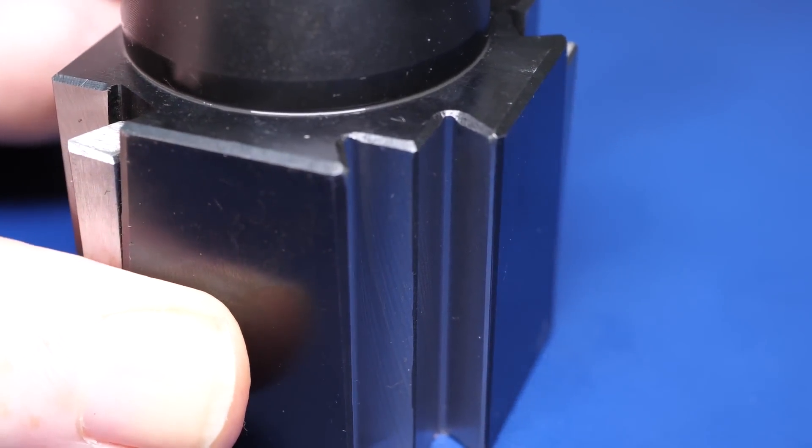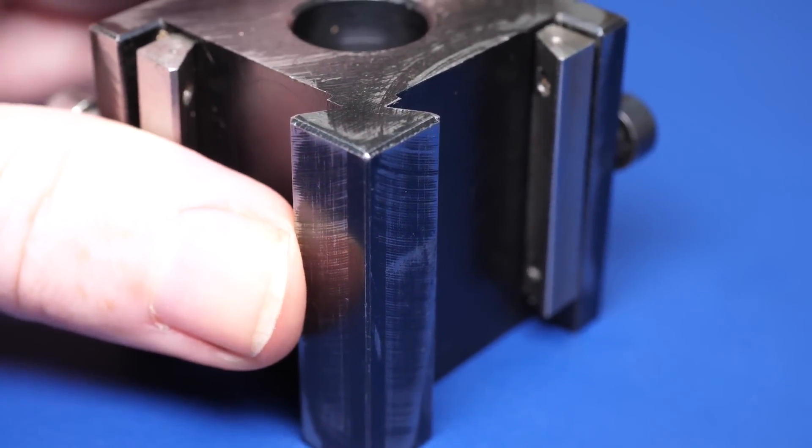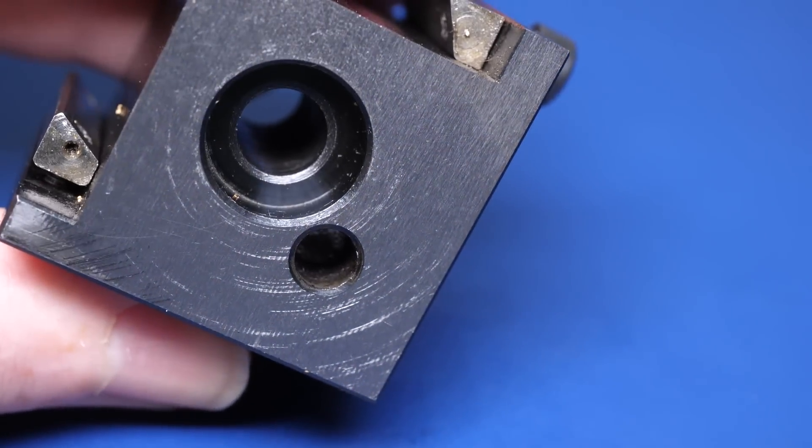The second difference that struck me is that the Machifit tool post ships with all the contact surfaces ground to a good finish. Some of the faces on the Proxxon tool post had a rough machined finish, and I had to get the bottom face surface ground on a friend's grinder. All in all I'm pretty happy with it.